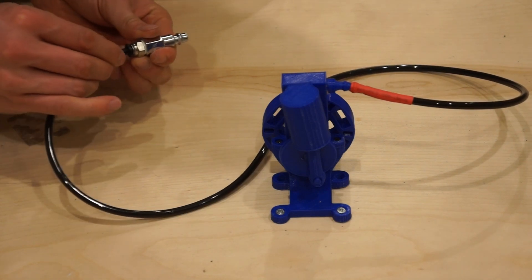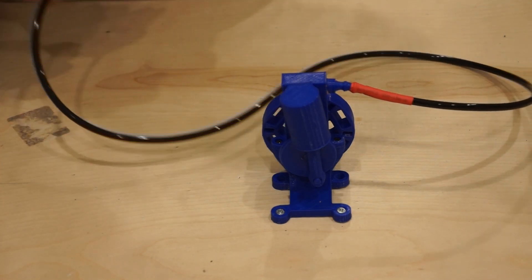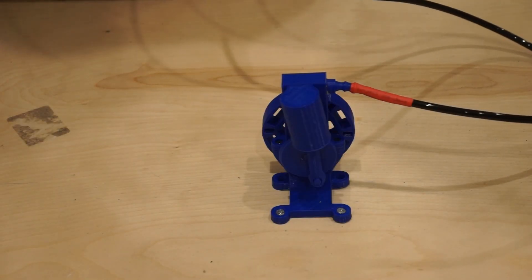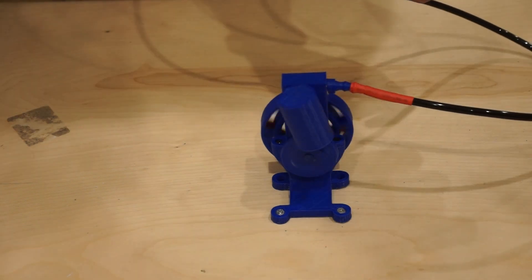Then I'll pop the tubing into this quick release fitting, which I'll connect to my compressor behind the scenes here. We'll spin the flywheel to get it started, and the engine takes off.